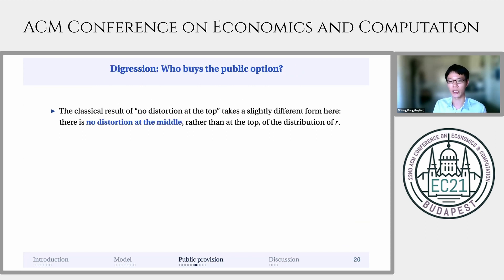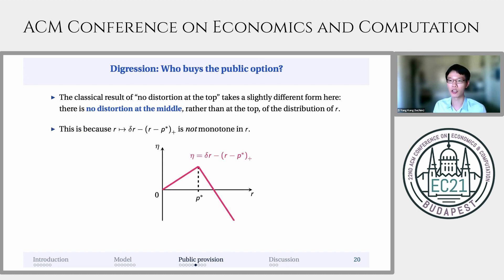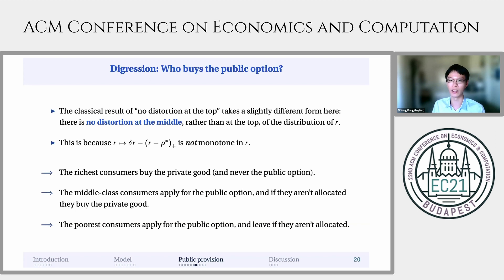At this point, we can already answer the question about who buys the public option. Unlike standard mechanism design, where there is no distortion at the top of the consumer type distribution, here there is no distortion in the middle of the distribution of consumer willingness to pay. This is because consumers' effective types are not monotone in R — they go up first, peak somewhere in the middle, and then subsequently decrease. Consumers with the middle values of R have the highest effective types. This implies that consumers with the highest willingness to pay — the richest consumers — always buy the private good and never the public option. Middle class consumers apply for the public option, and if not allocated, they buy the private good. And the poorest consumers apply for the public option and leave the market if not allocated.